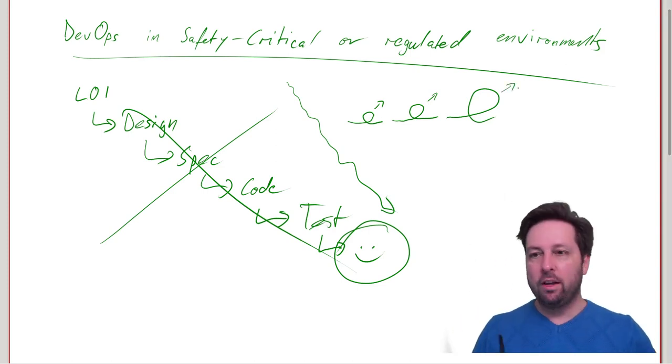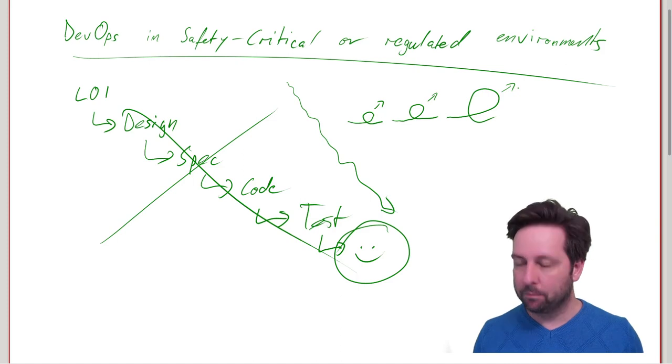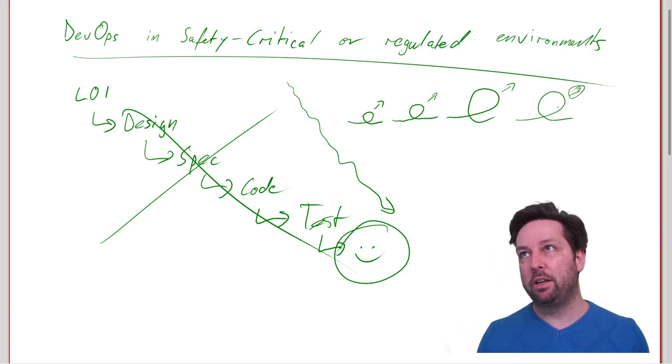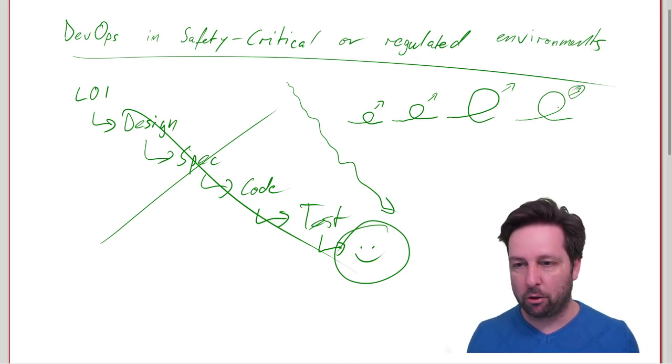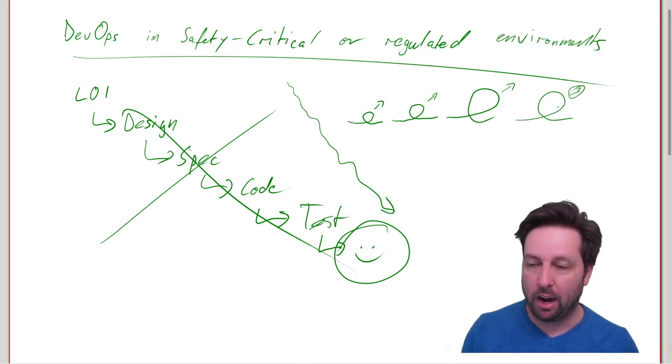And of course every time you do an iteration the functionality will grow, but also the safety-relevant implementation, the regulation-relevant implementation. And then eventually, at some point, you take the generated safety documentation, regulatory documentation, whatever, and you present it to the assessors, and hopefully they will be very happy.